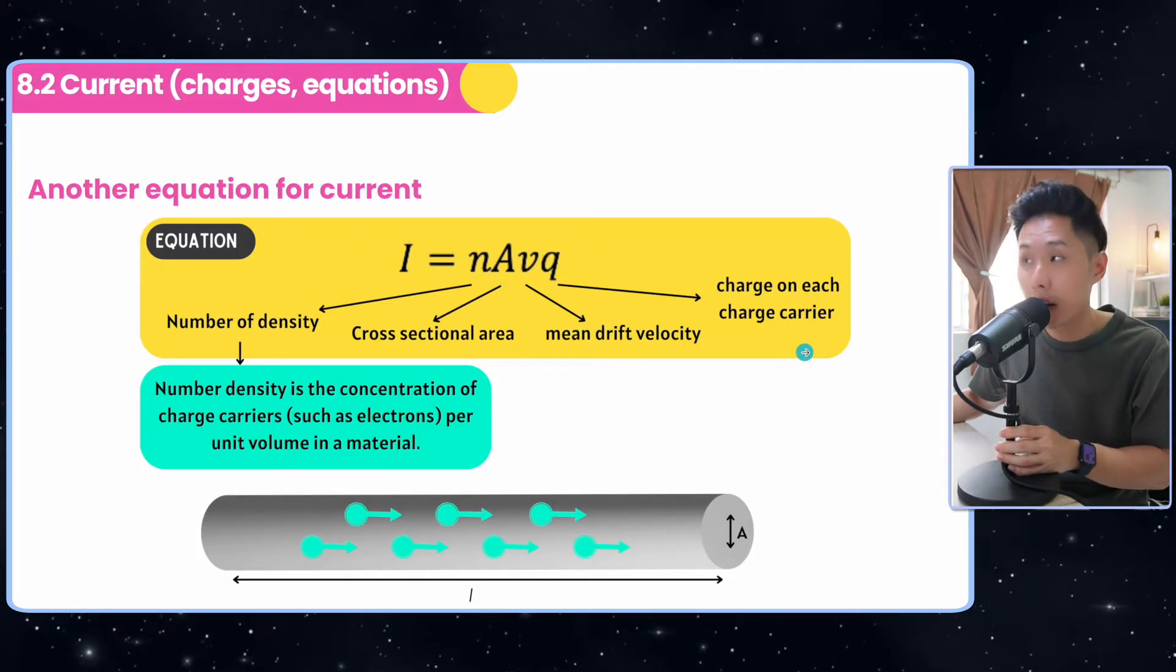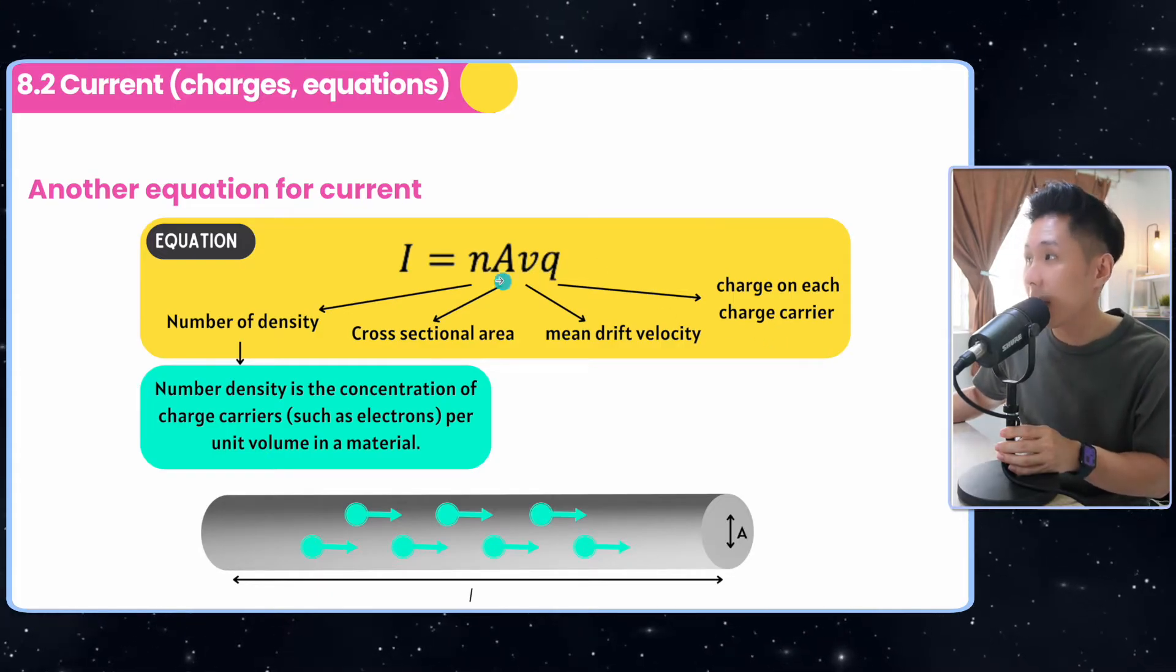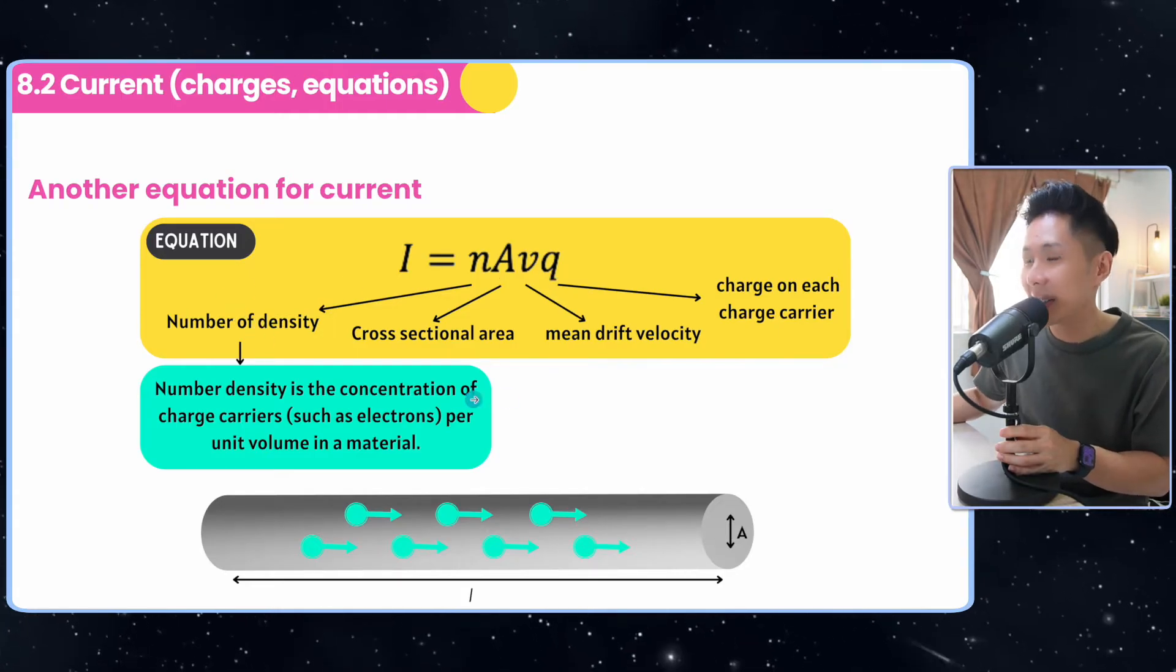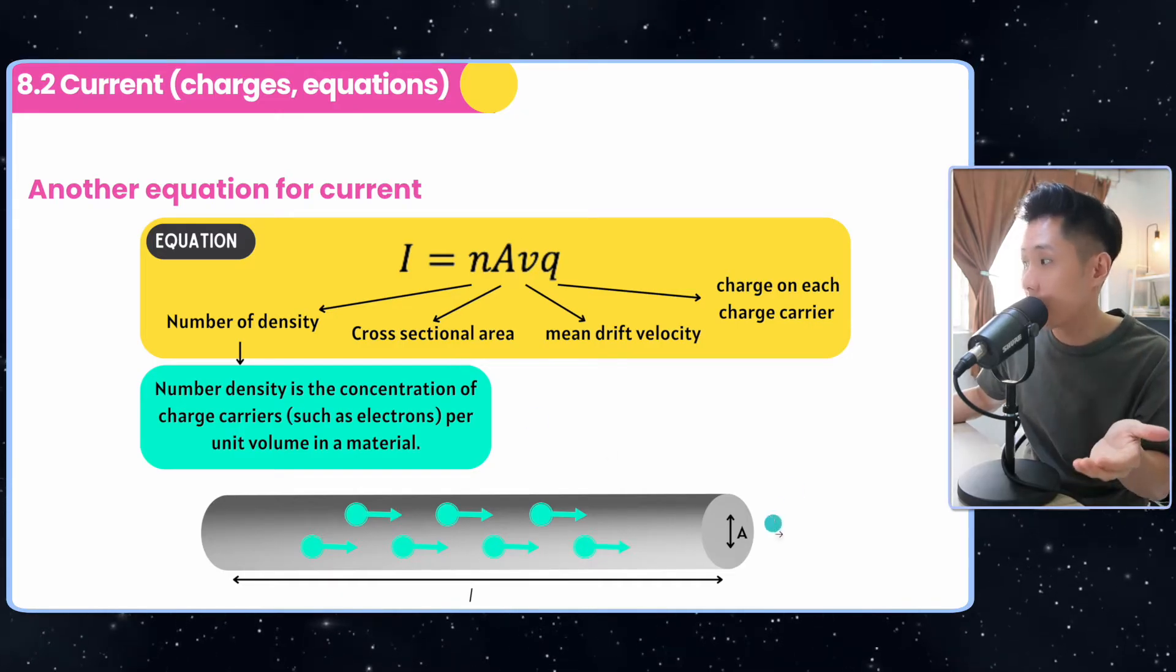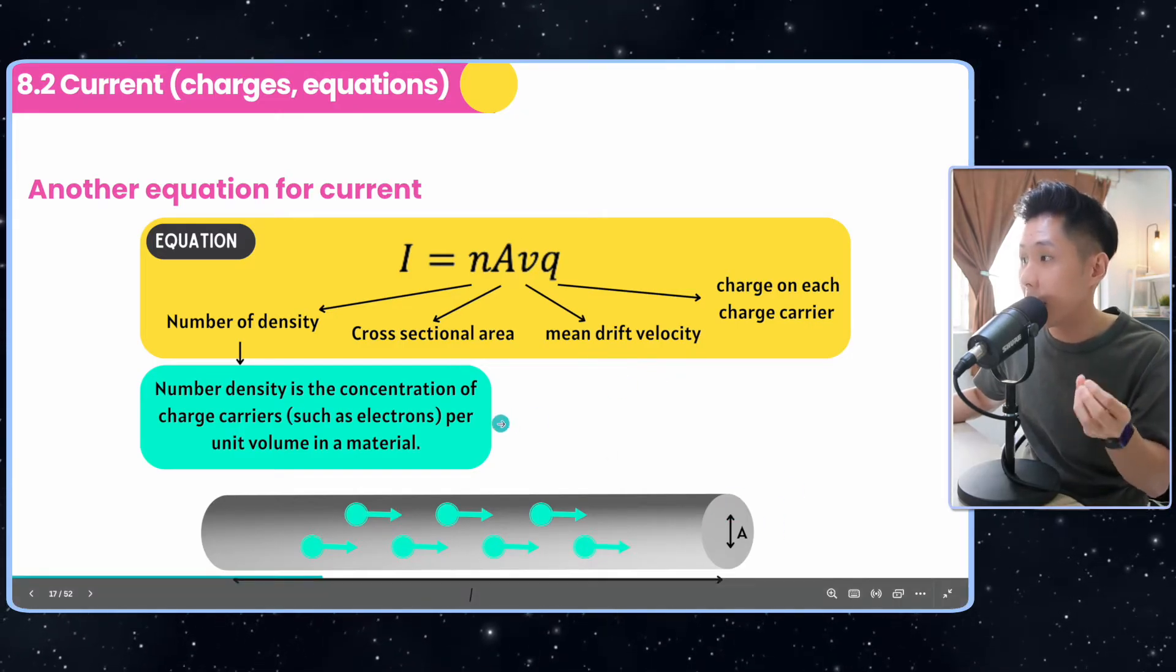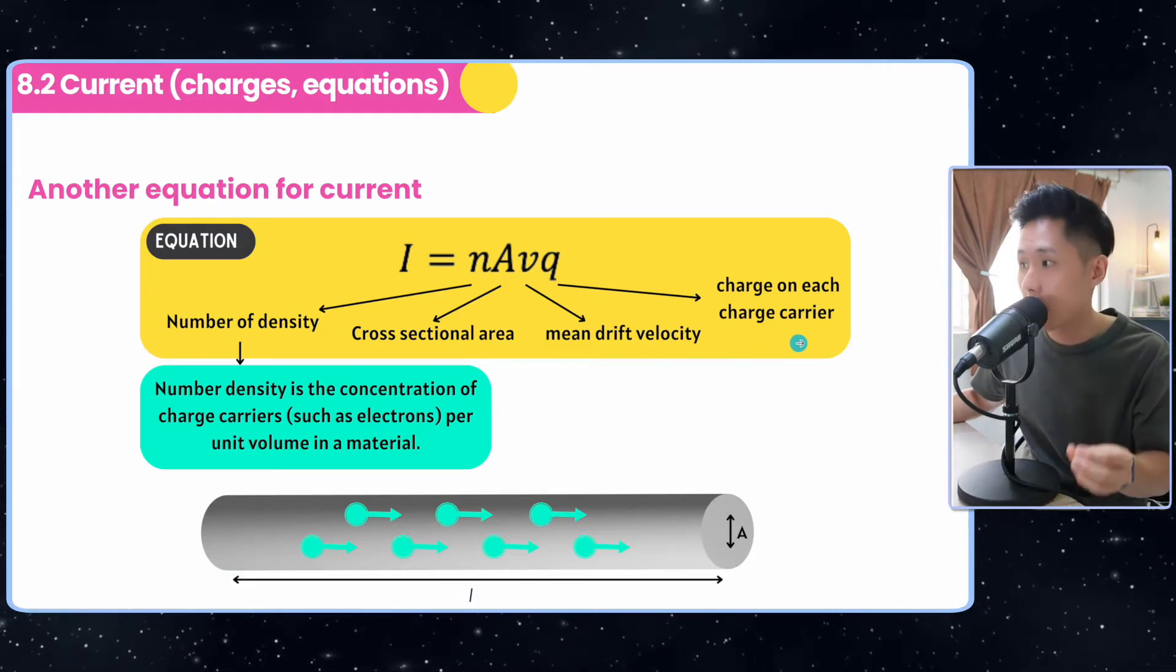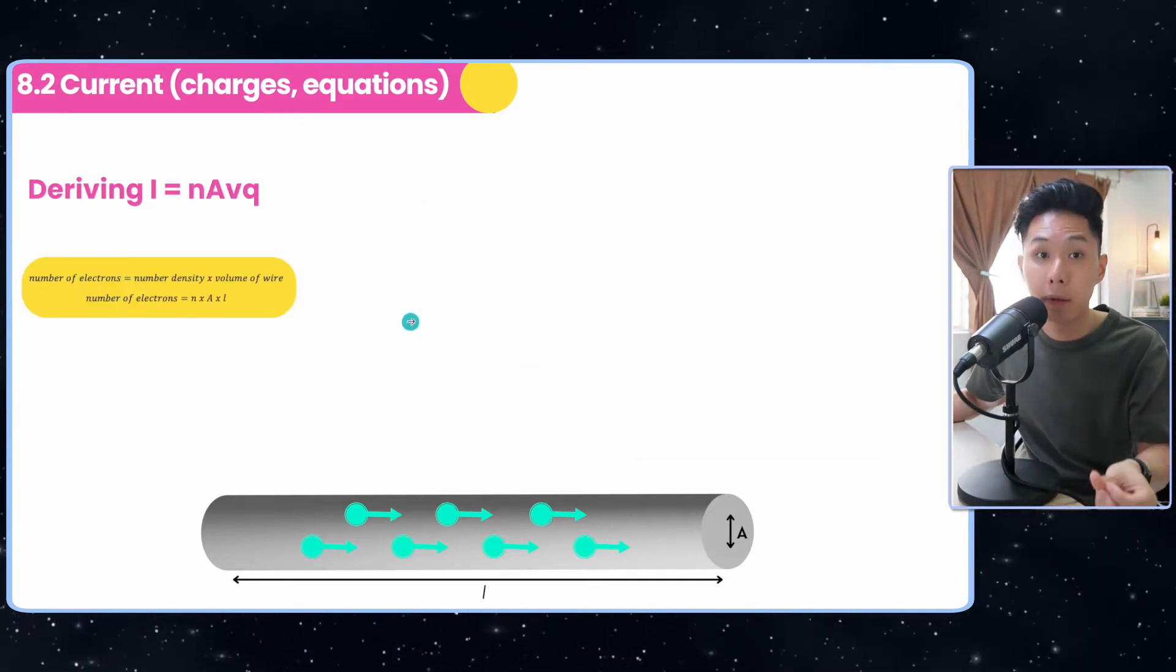And there's another formula for current that you have not learned in IGCSE physics. It's this one. I equal to NAVQ. N stands for number density. It is the concentration of charge carrier per unit volume. A is the cross-sectional area of the wire. Mean drift velocity is how fast they move. I'll explain more of that in a while. And Q is the charge on each charge carrier. So mean drift velocity is something that I will talk about. Now, how do we derive this form?